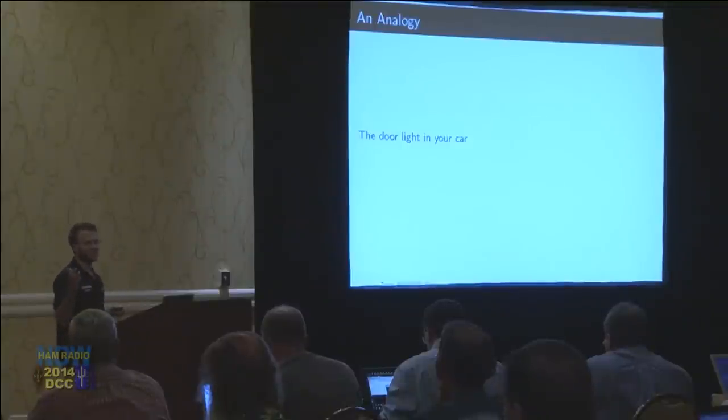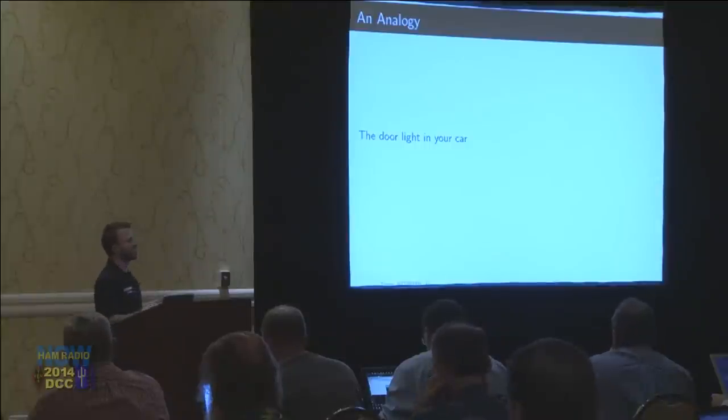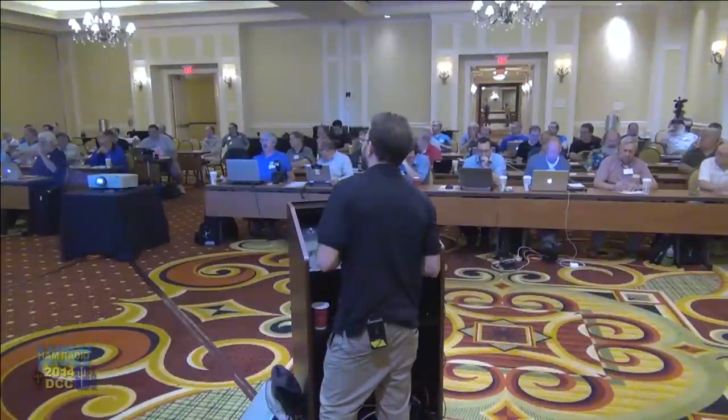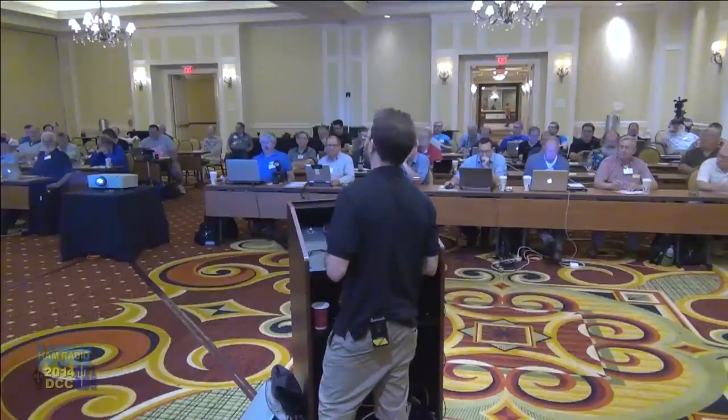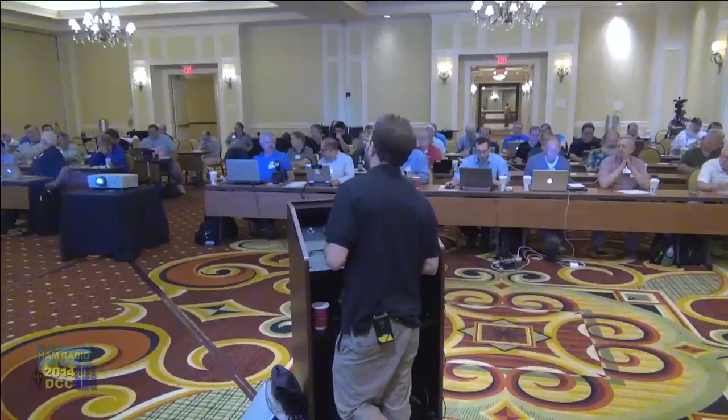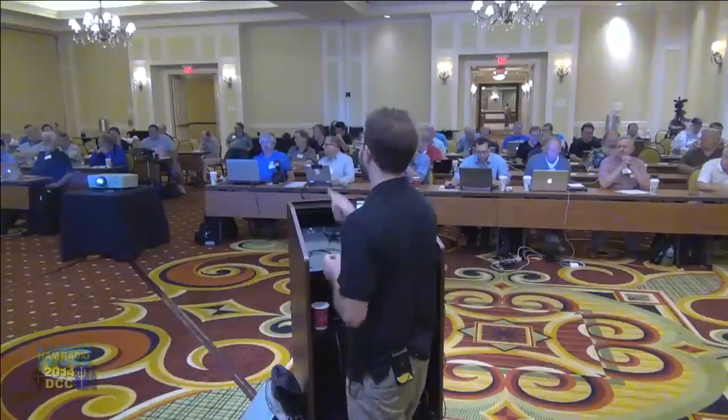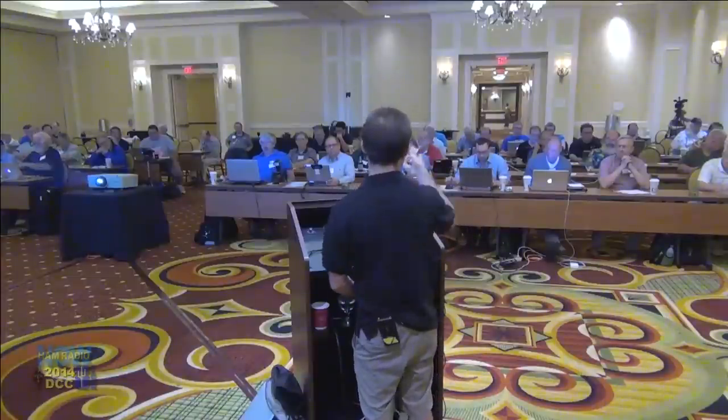We're going to talk about state machines. State machines are a very important part of designing. For those of us trying to follow along in real time, is that system package supposed to be in your repository? It is. The system package should be under the projects directory. There should be system.py, and then if you look at project1.py you'll be able to look at the raw code. We're now looking in the projects directory of the code base that's online. If you want to follow along with the code, pull up project1.py.